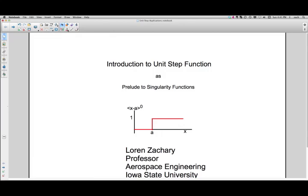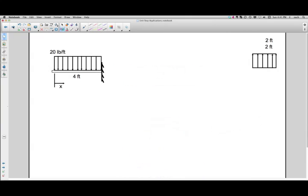So if this for instance was a value of 6, then when x was equal to 10, we would have bracket 10 minus 6 to the 0 power, 4 to the 0 power which is 1. So we're going to use that to get the w distribution equation for the entire beam.